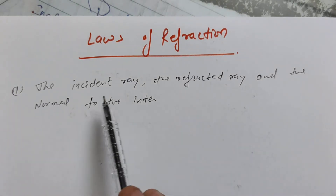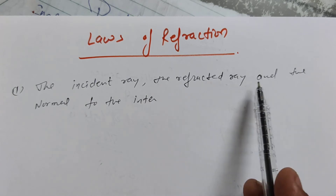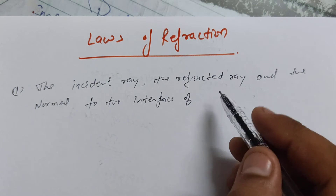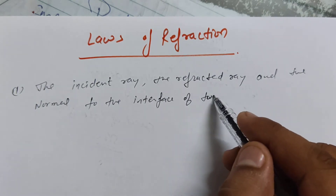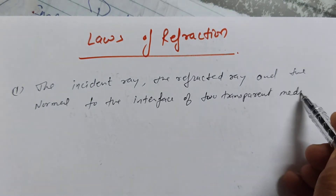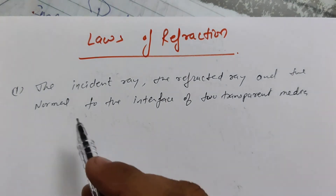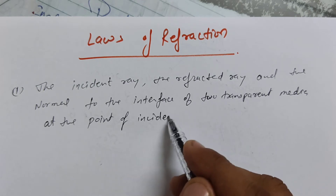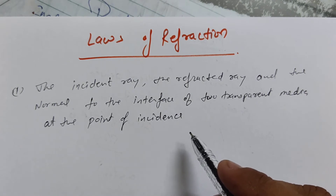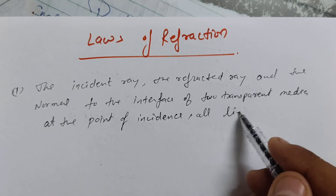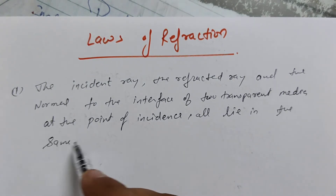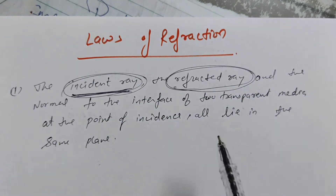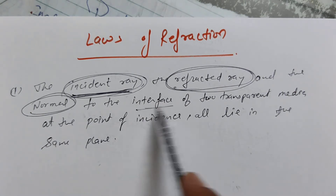Laws of Refraction. The first law states that the incident ray, the refracted ray, and the normal to the interface of two transparent media at the point of incidence all lie in the same plane. The incident ray, the refracted ray, and the normal — all lie in the same plane. The two surfaces at the interface are different.